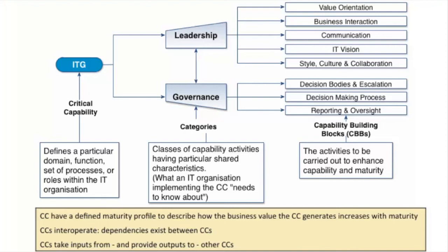Categories are classes of capability activities having particular shared characteristics. CBBs, or capability building blocks, are the activities to be carried out to enhance capability and maturity. Each CC has a defined maturity profile to describe how the business value generated by the CC increases with maturity. CCs are interoperable; dependencies can exist between CCs, and CCs can take inputs from and provide outputs to other CCs.